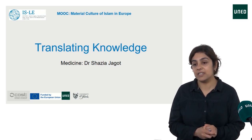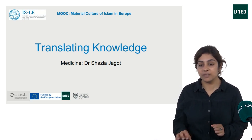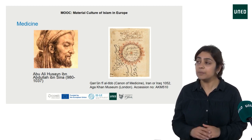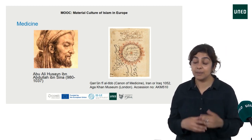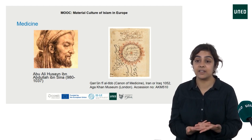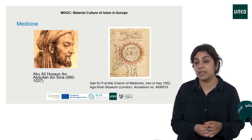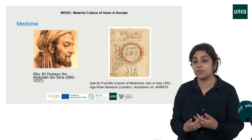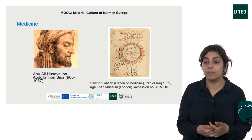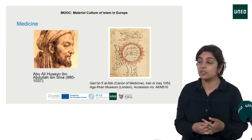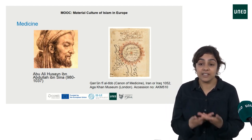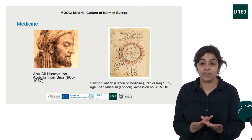So who was Ibn Sina and why was this text so popular? Ibn Sina, or as he became known in the Latin West, Avicenna, was a polymath who wrote compendia and treatises across a range of subjects, including philosophy or Islamic falsifah, as well as Islamic philosophical theology known as kalam, in addition to his works on medicine.